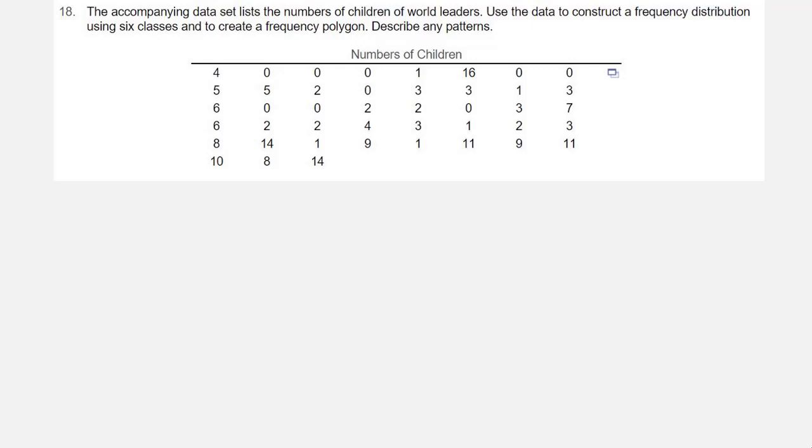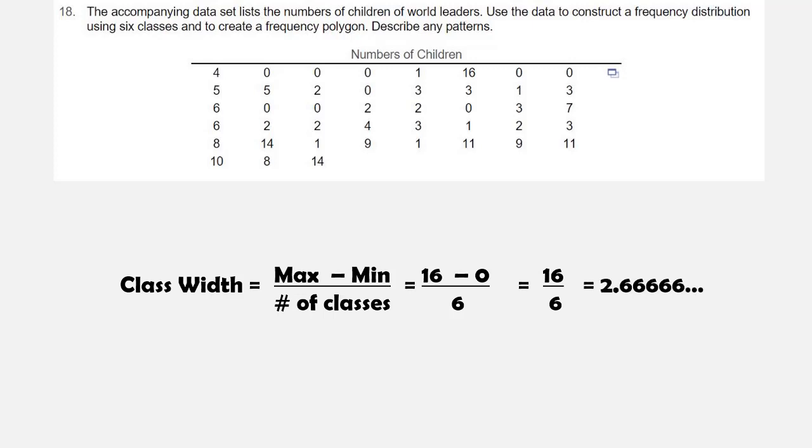So we have an array with 43 values in it. We first will find the class width. The class width is the maximum minus the minimum divided by the number of classes, which is going to equal the maximum is 16, the minimum is 0. 16 minus 0 is 16 divided by 6, which is going to be 2.666 repeating.